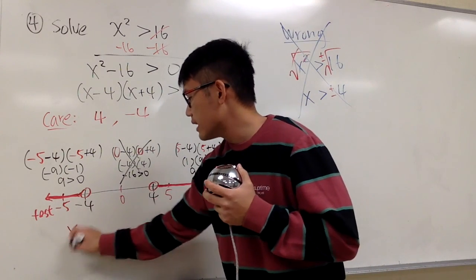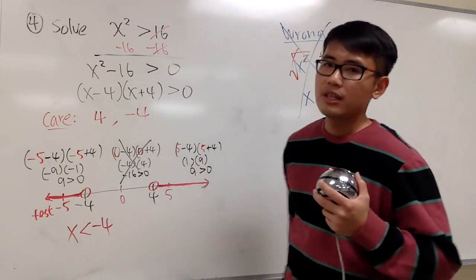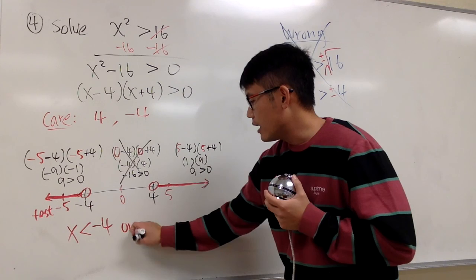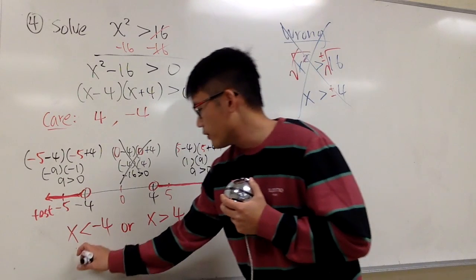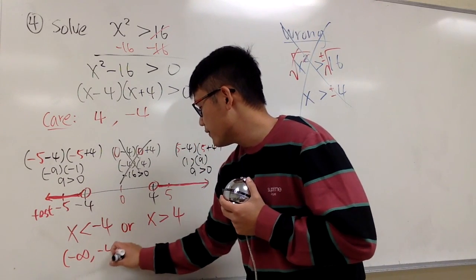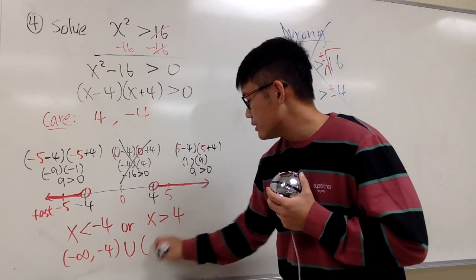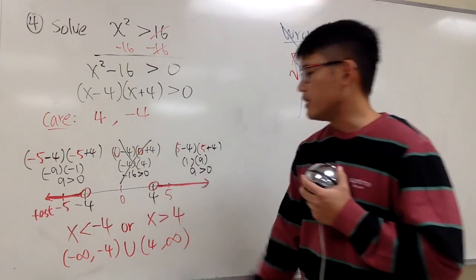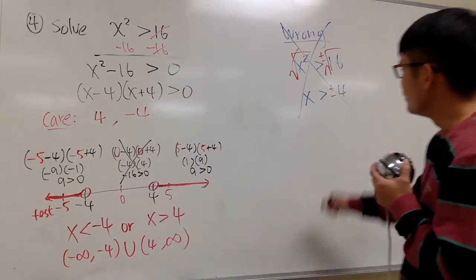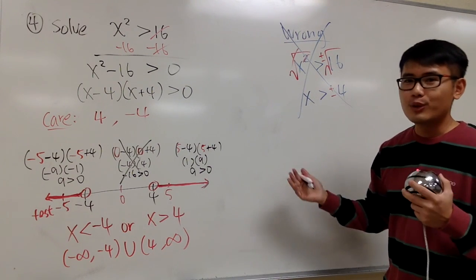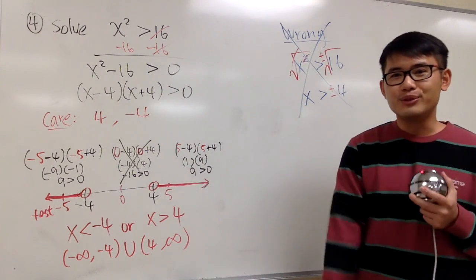So the answer is: x less than negative 4, or x greater than 4 — no equal sign because the original had open circles. For interval notation: negative infinity to negative 4, parentheses, union, parentheses 4 to positive infinity. This is how you get the correct answer. If you use the number line method, you don't have to worry about switching the inequality or anything like that. Hopefully these two examples helped. See you next time.